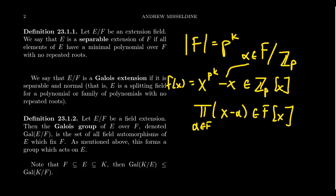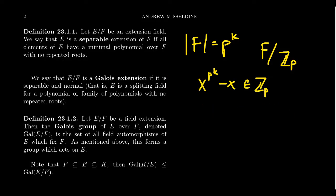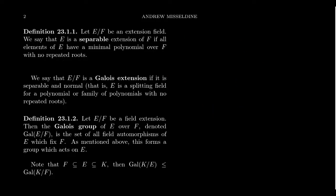For a typical element α in F, its minimal polynomial over ℤ_p divides x^(p^k) - x. Since that polynomial has no repeated roots, the minimal polynomial of α has no repeated roots either, so α is a separable element. Every element of F satisfies this, so F over ℤ_p is a separable extension. Any intermediate field inherits this via chains of separable extensions, so every finite field is separable over any subfield.